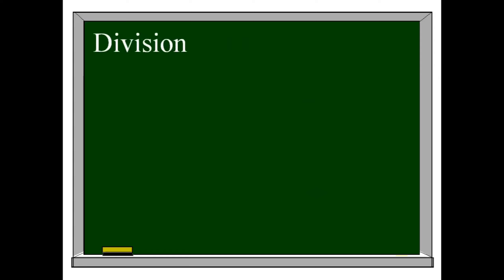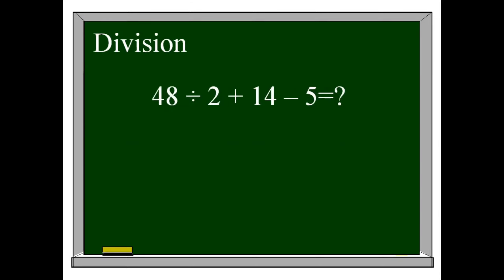The fourth step is Division. In our expression we have 48 divided by 2. 48 divided by 2 gives us 24. Don't forget to write the remaining components of your expression.